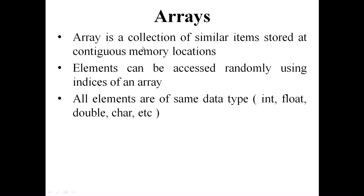Arrays. An array is a collection of similar items stored at continuous memory locations. The same type of data is stored in an array. For example, an integer array contains all elements of integer type, and a floating point array contains all elements of floating point numbers.